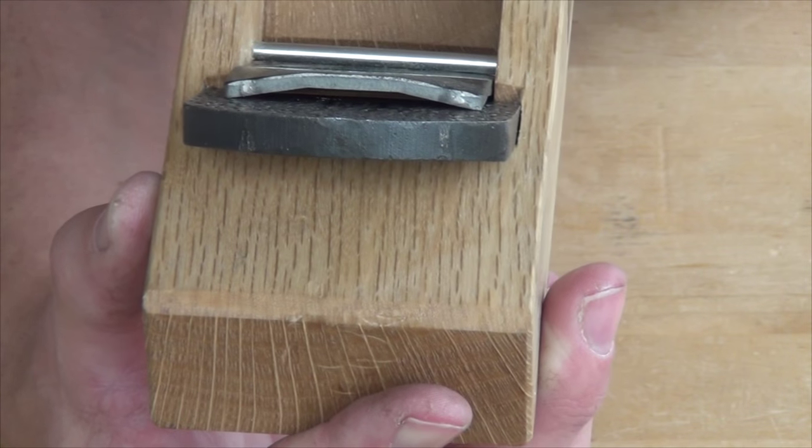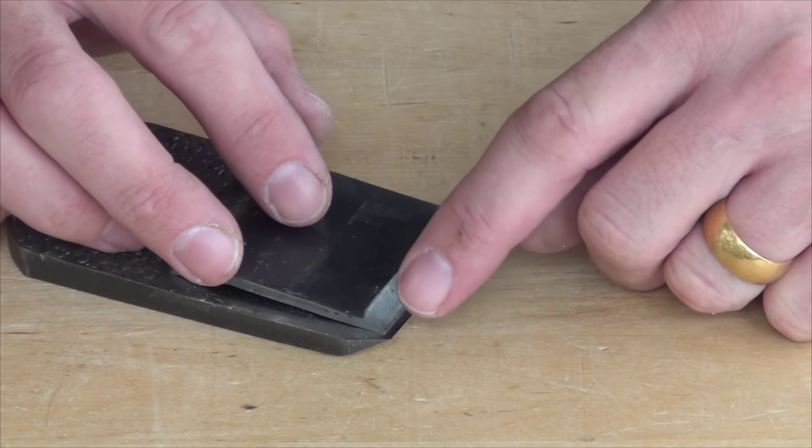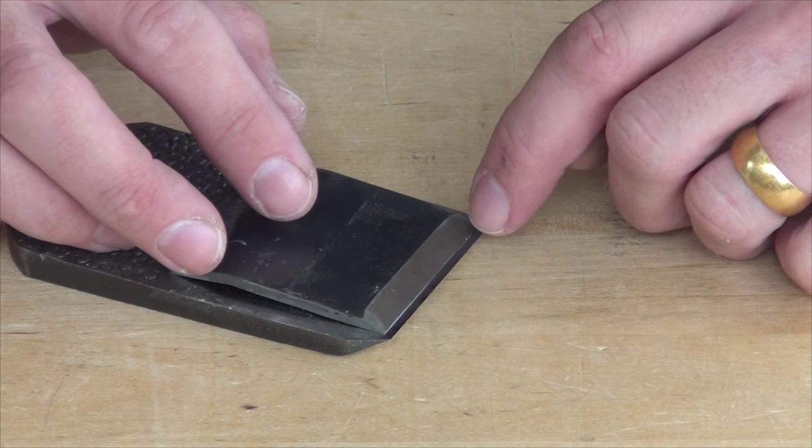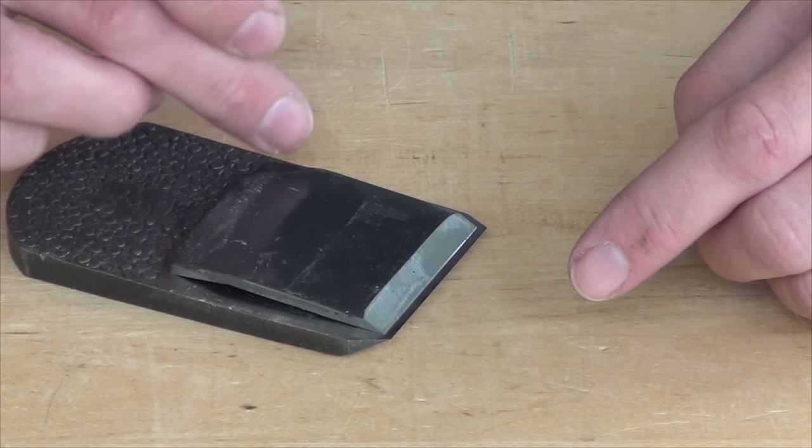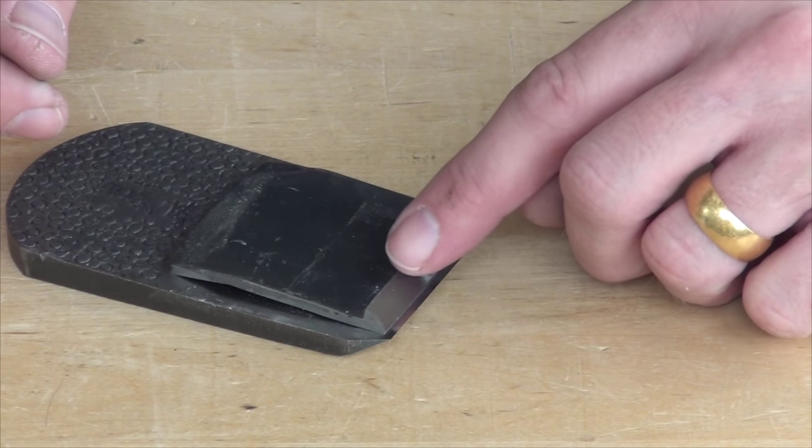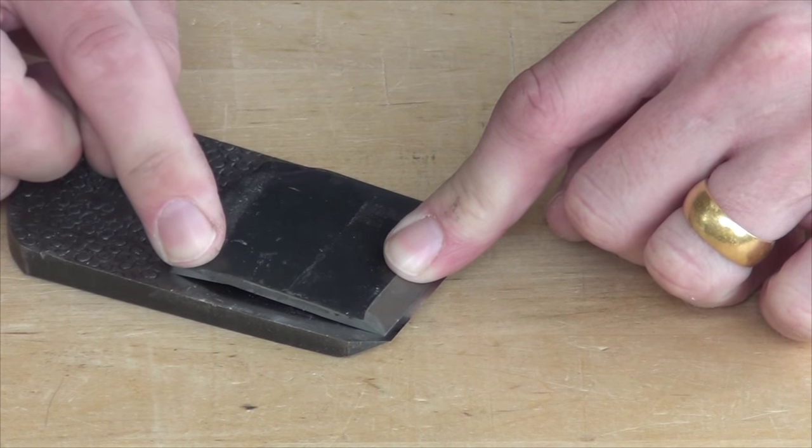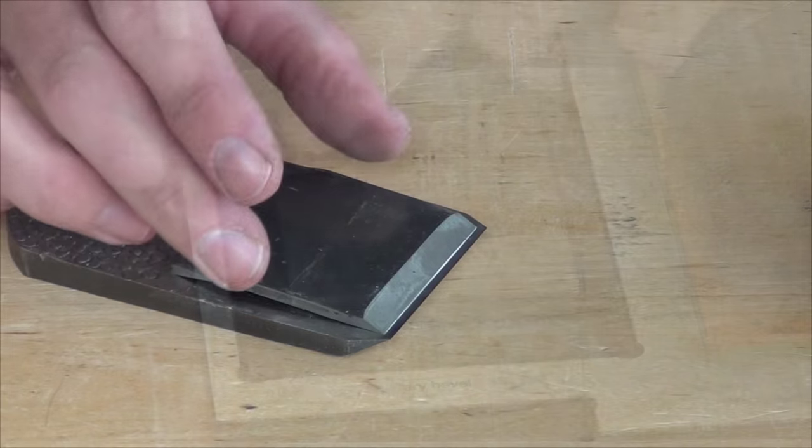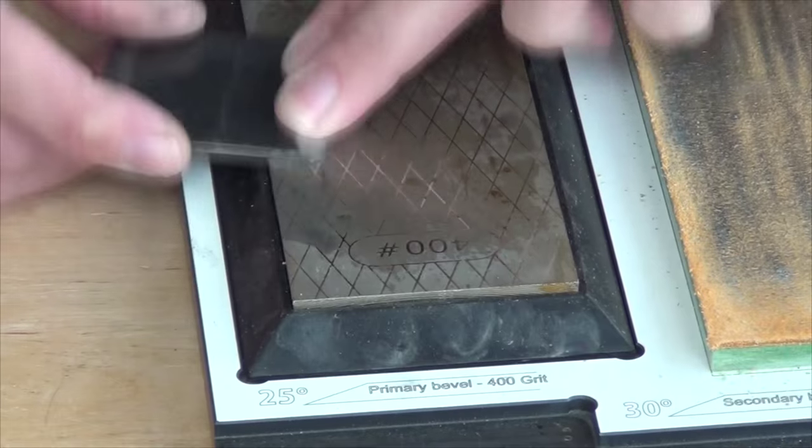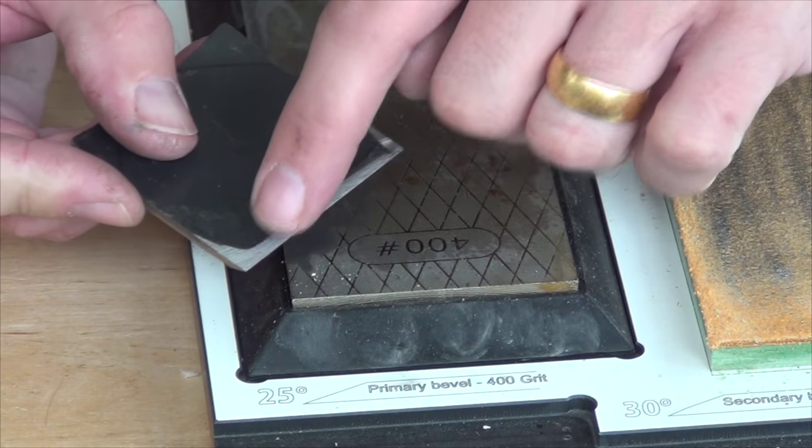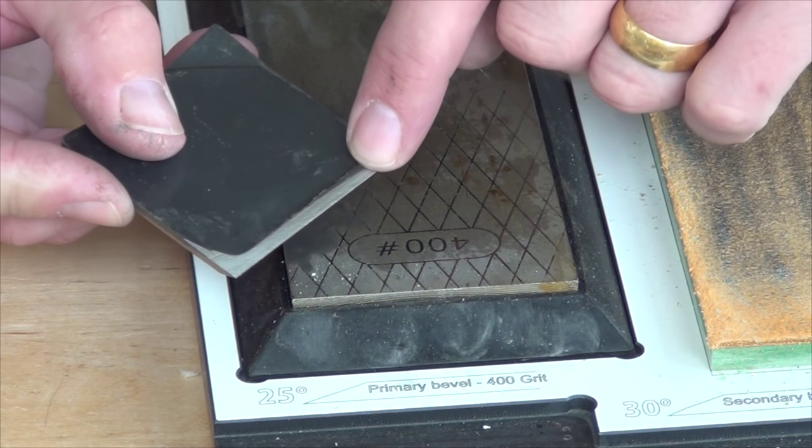And since we've flattened the back of the blade, that means we need to get the chip breaker nice and flat. To prepare the chip breaker, we need to make sure that it's in full contact along the front where it touches the blade and also that it's got point contacts on these back two corners. If I hold the front down against the blade, you can hear it rocking. So there's obviously some work to do there. So now you can see I've got a scratch pattern across the whole of the front edge. That should be straight and should be a good match to the iron.